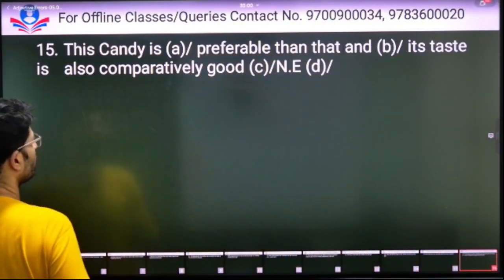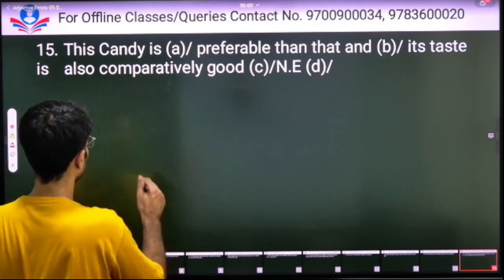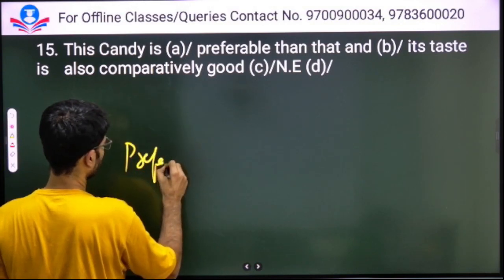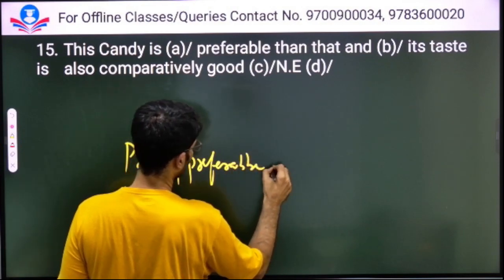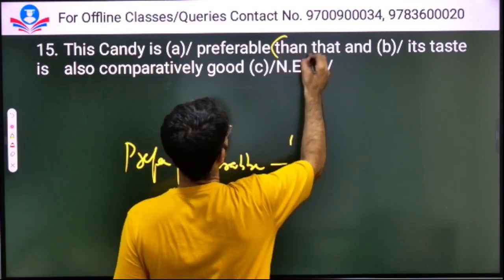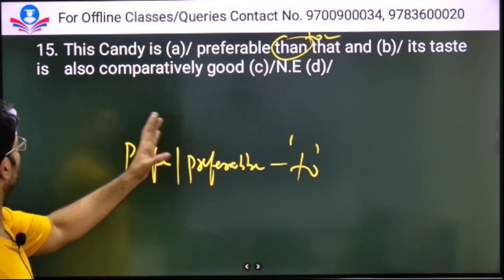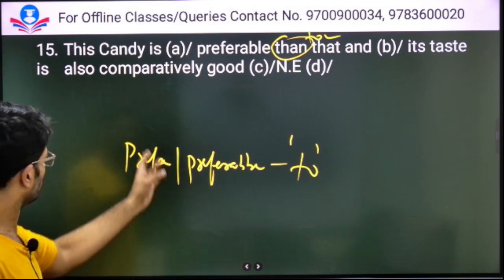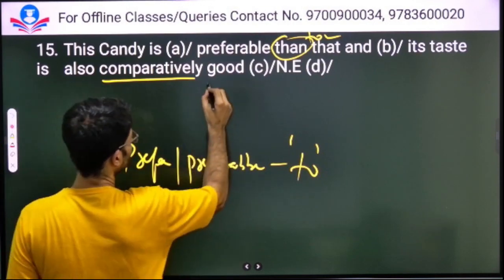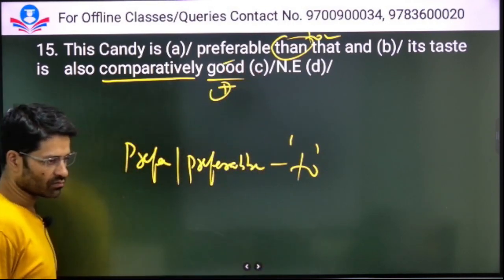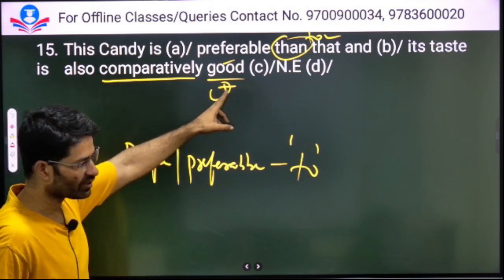This candy is preferable than that and its taste is also comparatively good. 'Comparatively' already indicates comparison. When you say 'comparatively', you already have the comparative sense. So the positive degree is correct here. It should not be comparative degree. Positive degree is right.